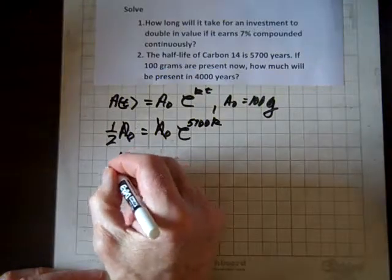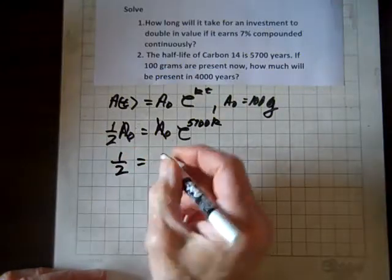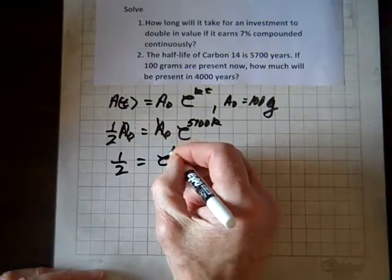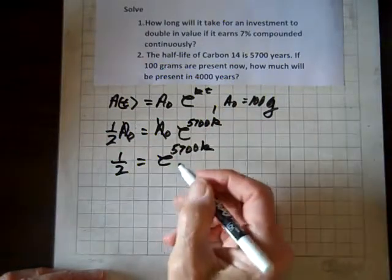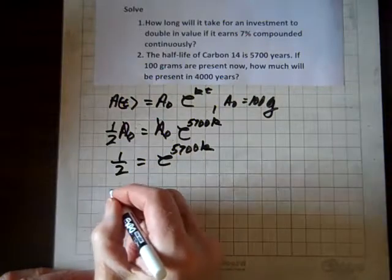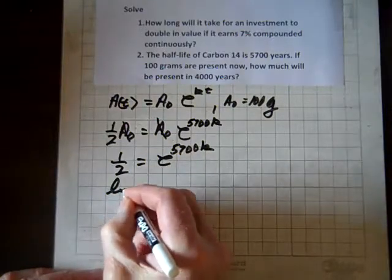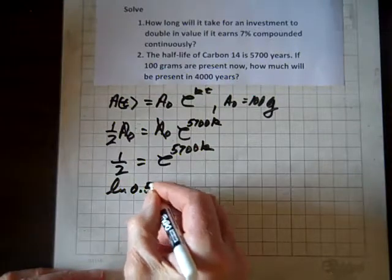And we're left with one half equals e to the 5,700 k. Now we'll do as we've done before. We'll take the natural log of both sides. And so I get ln of 0.5.